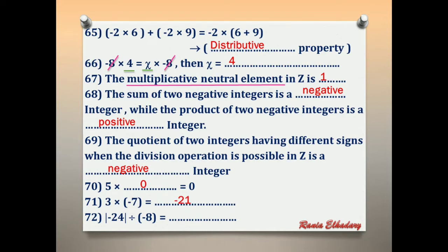Number 72: absolute of negative 24, divided by negative 8. Absolute of negative 24 is 24. 24 divided by negative 8 equals negative 3.